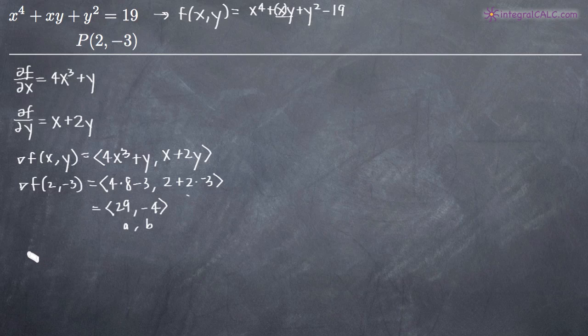The formula for that is going to be a times x minus x sub 0 plus b times y minus y sub 0. And if you had a third variable, as you often will when you're dealing with gradient vectors, if you had a, b, c here, you could say plus c times z minus z sub zero. But in this case, we only have a and b, so that's all we're worried about. And then we set that equal to zero.